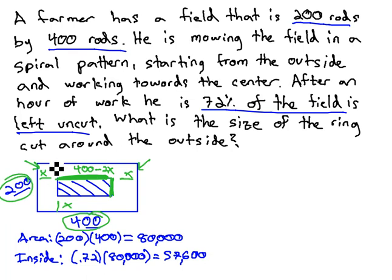Similarly, with the height, it was 200, but taking an x off the top and bottom, we now have 200 minus 2x.